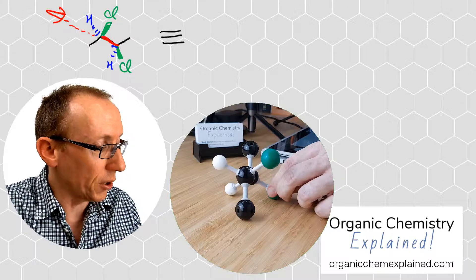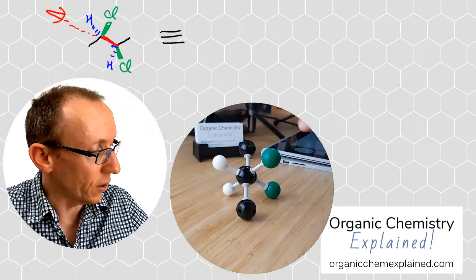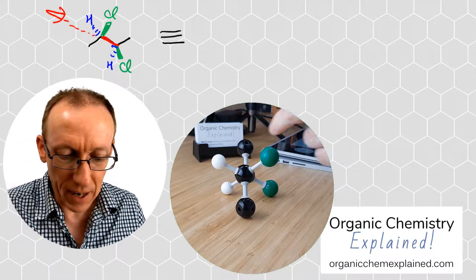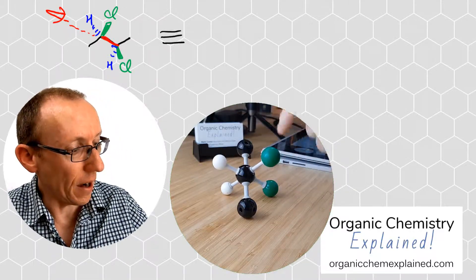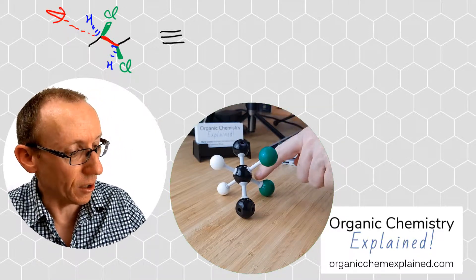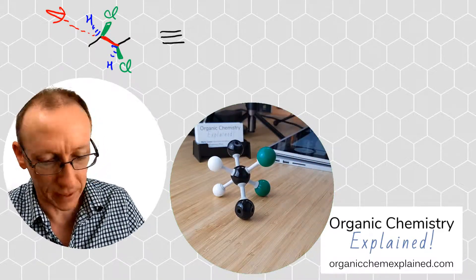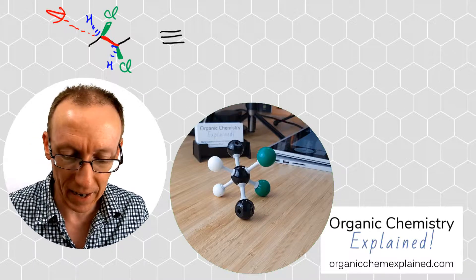If I twist the molecule around now you can see you're looking down that bond and everything that was up is now off to the right. So the two chlorines are off to the right within this structure as we look along that carbon-carbon bond from that angle.